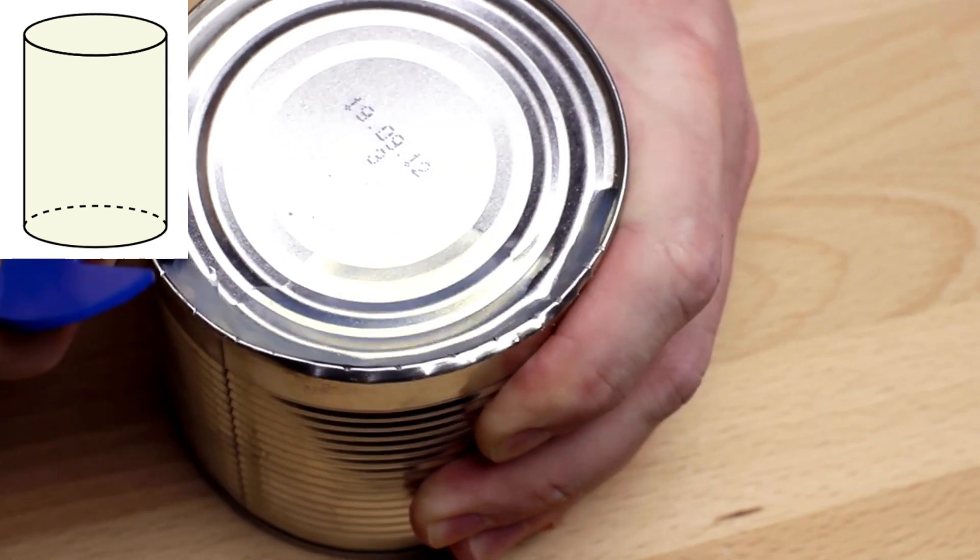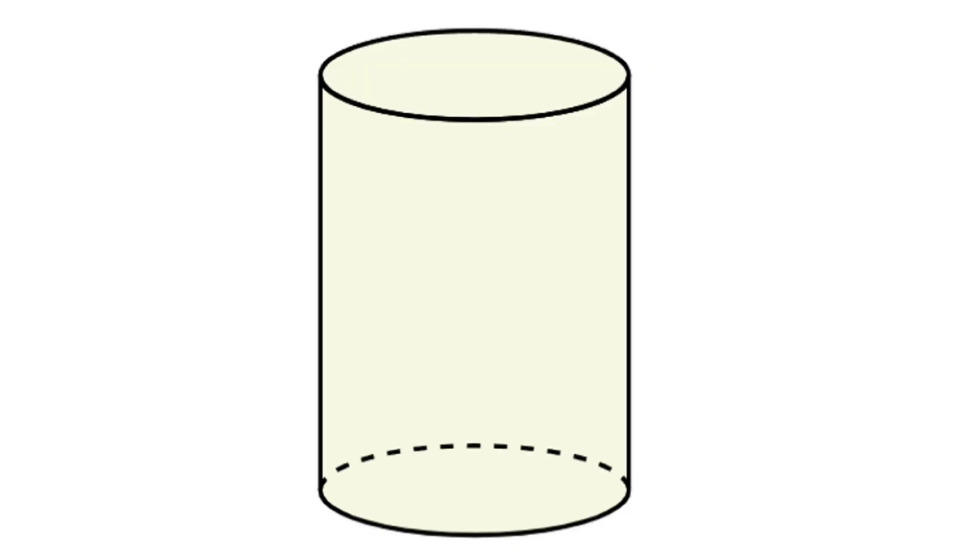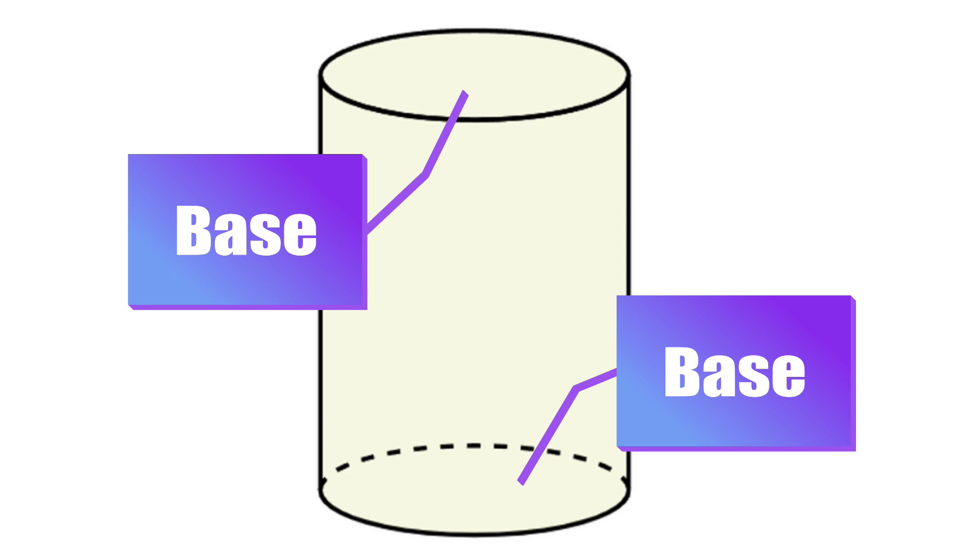A cylinder looks like a can of corn. It has no vertices. It has two disks, one at each end, which we call bases. This is how a drawing of a cylinder looks.